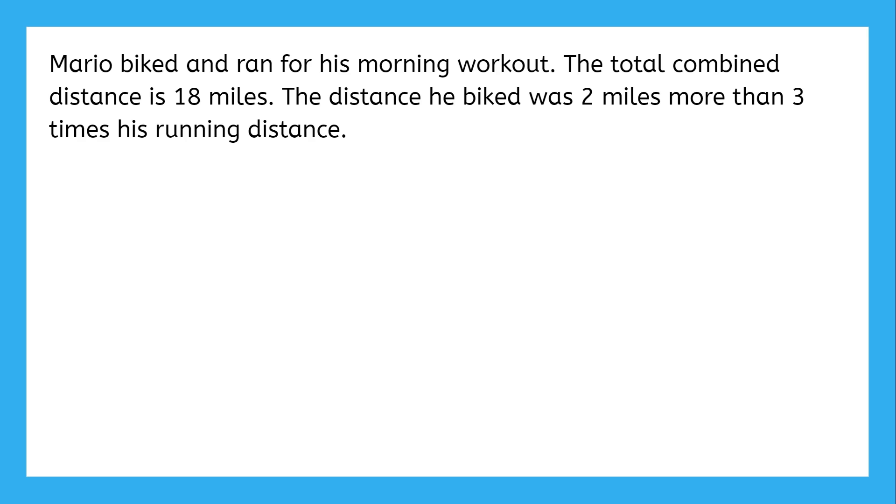Mario biked and ran for his morning workout. The total combined distance is 18 miles. The distance he biked was two miles more than three times his running distance. Here, we know Mario's total distance, and we have a relationship between the distance he biked and the distance he ran.